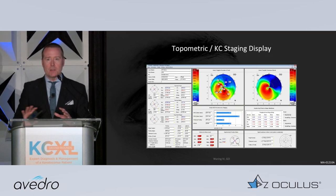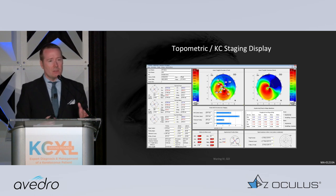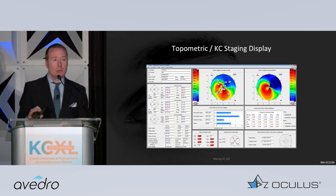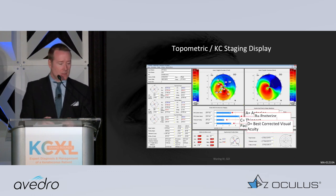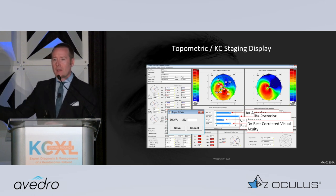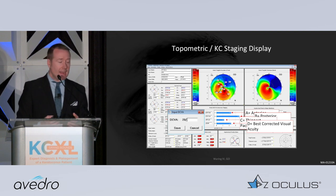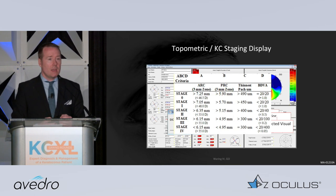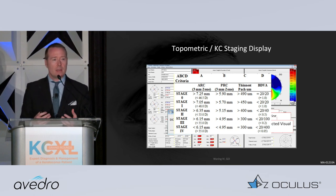You have access to two maps for the ABCD display. It shows you based on severity — Michael Belin actually proposed a staging for each criterion on a stage one through four, and you can see that in the horizontal blue bars. You'll manually enter the best-corrected distance acuity to get the full display, but even if you don't do it, the other three bars are extraordinarily useful. What we're used to looking at is the A — and at least in all the metrics discussed so far for progression, stability, and regression — it's usually the anterior surface or anterior curvature.